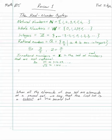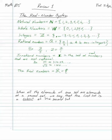And then real numbers — we use capital R with an extra line. Real numbers are the set of all rationals plus all irrationals combined.